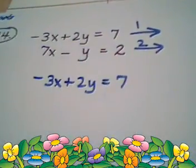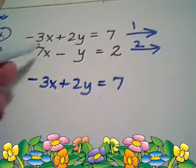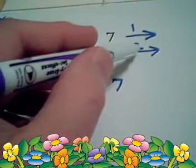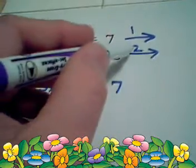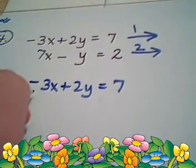When I take the second equation and I multiply by two, which is what I mean by putting this arrow with the two, that will become 14x minus 2y is equal to 4.